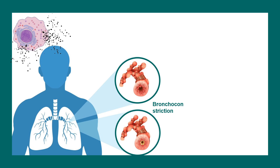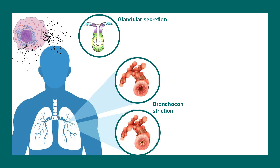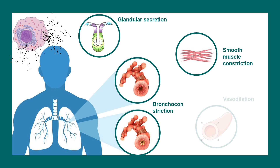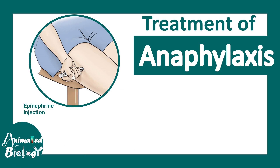This degranulation can cause several things. Most commonly, bronchoconstriction — when the airways are constricted, it is difficult to breathe and less oxygen reaches different parts of the body. There is also increased glandular secretions, smooth muscle constriction, and vasodilation. Dilated vessels allow more immune cells to move to the affected regions and cause inflammation.